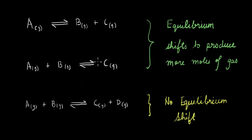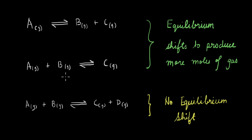Comparing all the calculations: whenever we have unequal number of moles between the reactant side and the product side, the equilibrium shifts to produce more moles of gas. When we had equal number of moles on both sides, the equilibrium position did not shift. This was for introduction of an inert gas at constant pressure. Now let's see what happens if we introduce an inert gas at constant volume — and spoiler alert, the number of moles are not going to matter in that case, so we will need only one calculation.